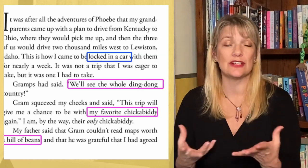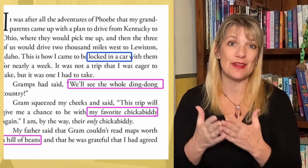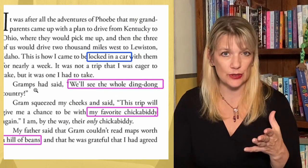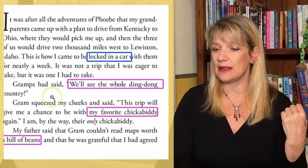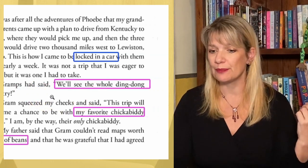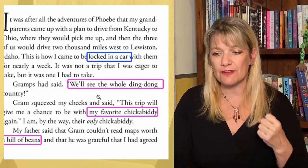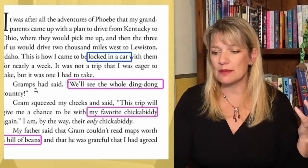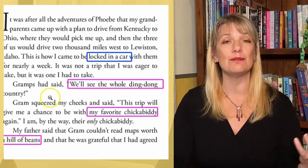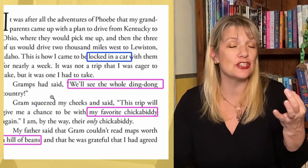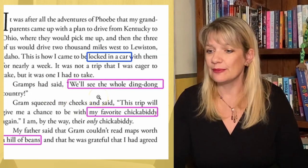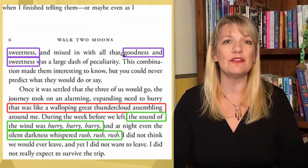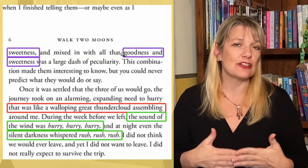The second technique I want to point out is her diction — her word choice — and how it is authentic to each character. We have grandma and grandpa who are eccentric characters. The first thing we hear Gramps say is 'We'll see the whole ding-dong country' — they're going on a road trip. Then Grams squeezes her cheeks and says 'You're my favorite little chickabitty.' Where do these words come from? Only Grams and Gramps know. They talk about things not being 'worth a hill of beans' — which could be a cliché, but it's completely authentic coming from them. And: 'They would have said that I might as well try to catch a fish in the air.' All of these colloquialisms are absolutely authentic to who they are.